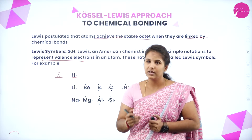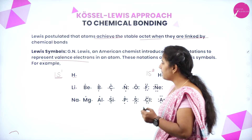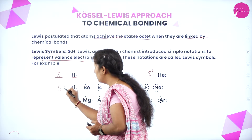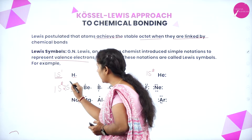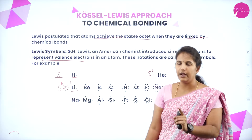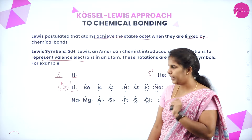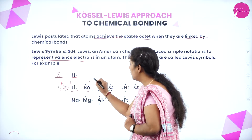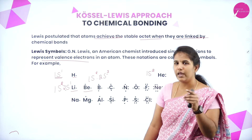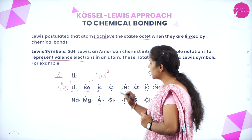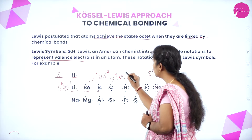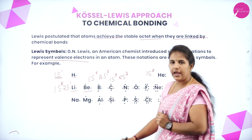This is the Lewis approach to write valence electrons in each atom, first discovered by Lewis. For lithium with configuration 1s2 2s1, there is only one electron in the outermost shell, so one dot. For beryllium with 1s2 2s2, two electrons in the last shell, so two dots. For boron with 1s2 2s2 2p1, three electrons are there in boron.